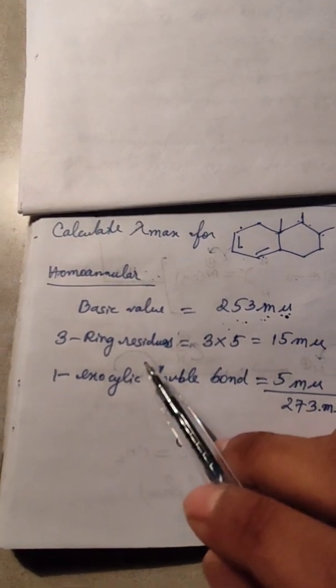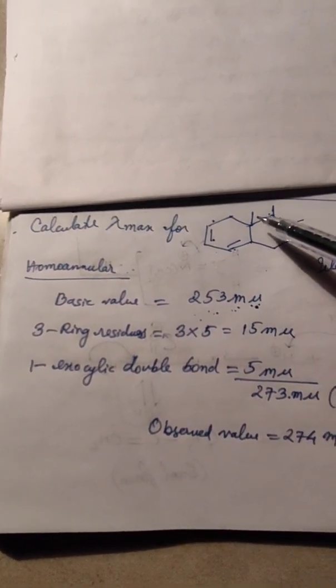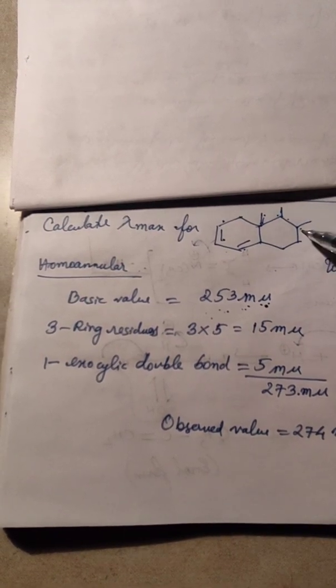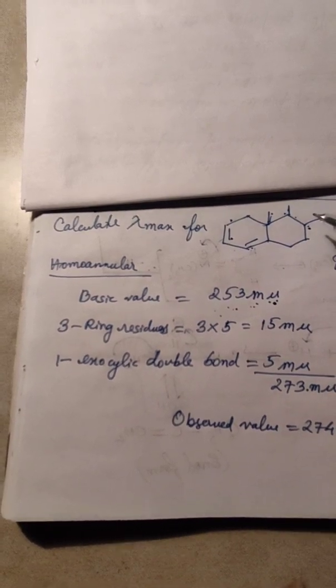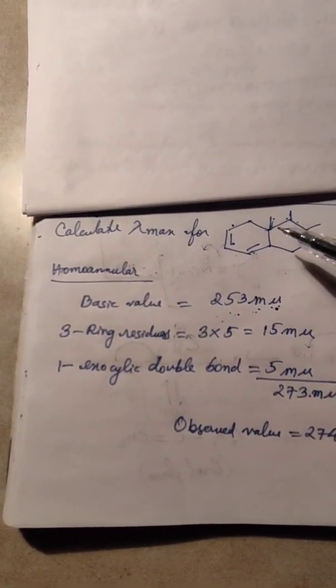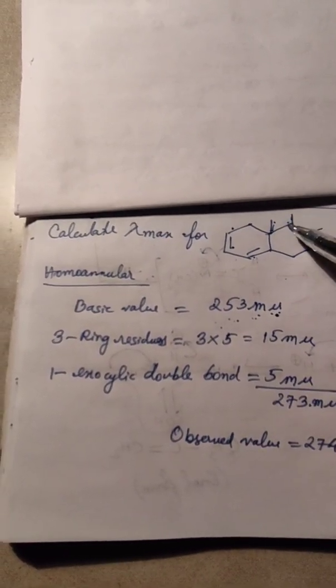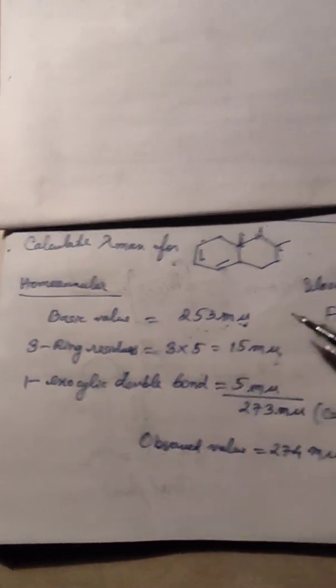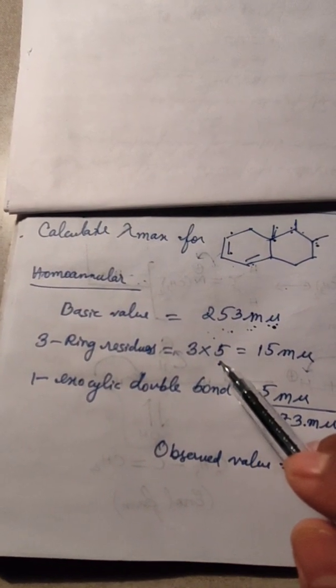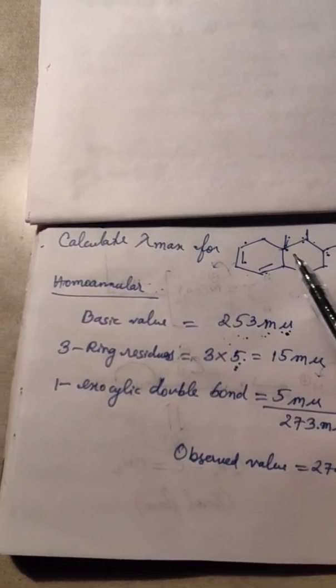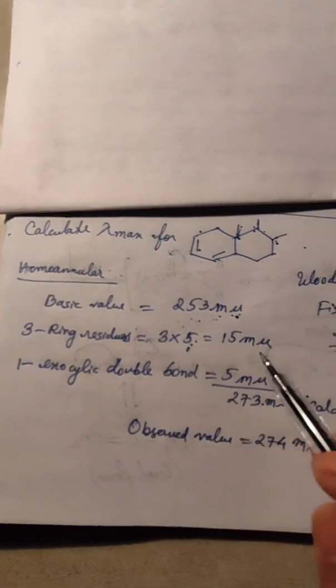In the second step, we will see how many ring residues are there. Ring residues means any alkyl substituent which is present on the ring outside. Here, how many ring residues are present? One, two, three. According to Woodward-Fisher rules, the ring residue value is 5 millimicrons, so with three ring residues we calculate 3 times 5, which gives us 15 millimicrons.